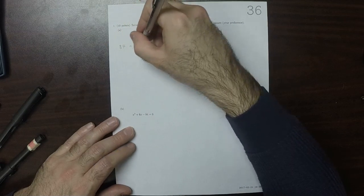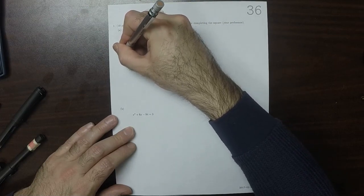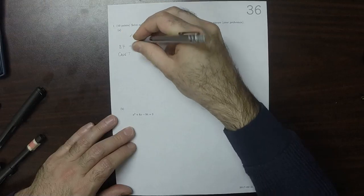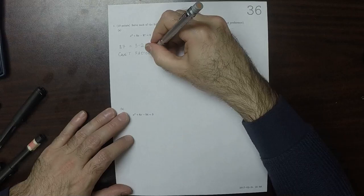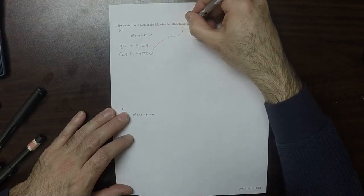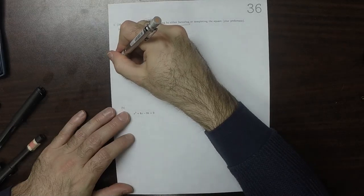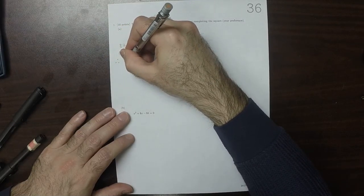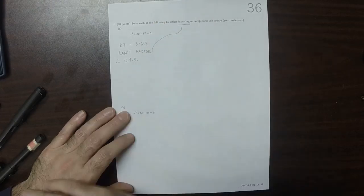So because 87 factors in this way, you can't factor in the easy way. So, therefore, we'll use complete the square.